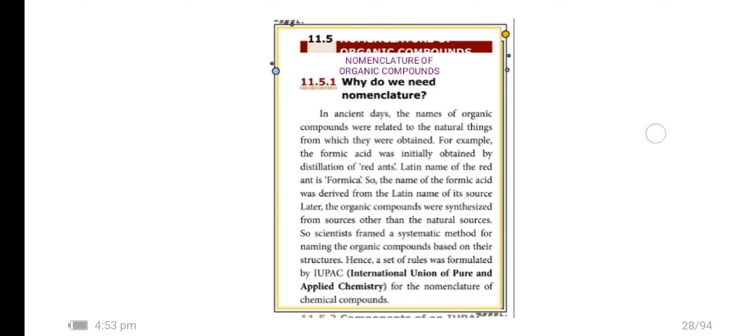In ancient days, the names of organic compounds were related to the natural things from which they were obtained. For example, the formic acid was initially obtained by the distillation of red ants. Latin name of the red ant is formica. So the name of formic acid was derived from the Latin name of its source.